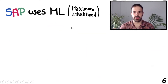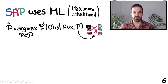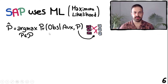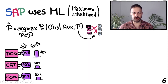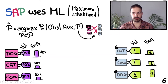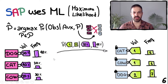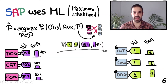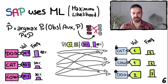Our attack uses this mathematical model to perform maximum likelihood estimation. We look for the assignment of keywords to tokens P that maximizes the probability of the observations given the auxiliary information. Given auxiliary volumes and frequencies on one side, and observed volumes and frequencies on the other, we compute the probability of each assignment. For example, this is the probability that a keyword with a 50% chance of appearing in each document and queried on average 40% of the time appears in a single document and is queried just once. We compute these probabilities for each possible assignment and then find the most likely assignment by running the Hungarian algorithm.